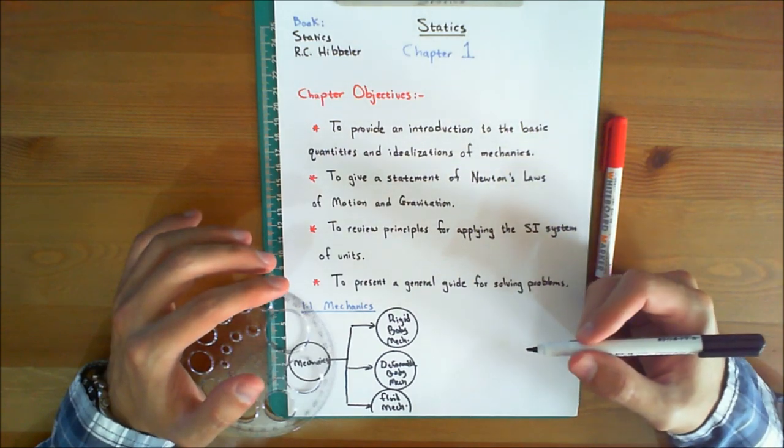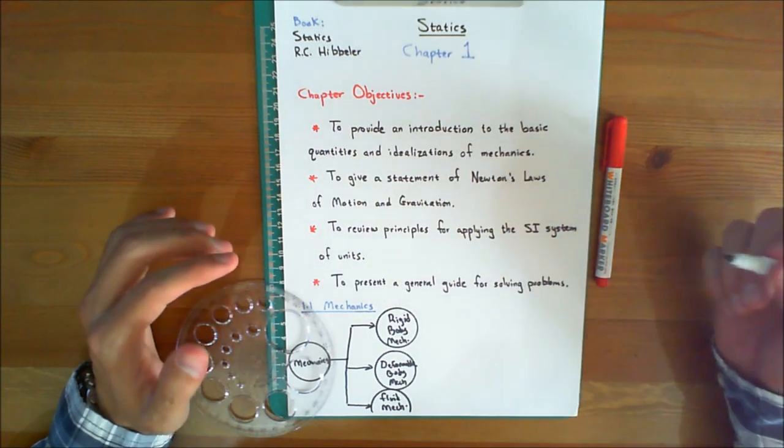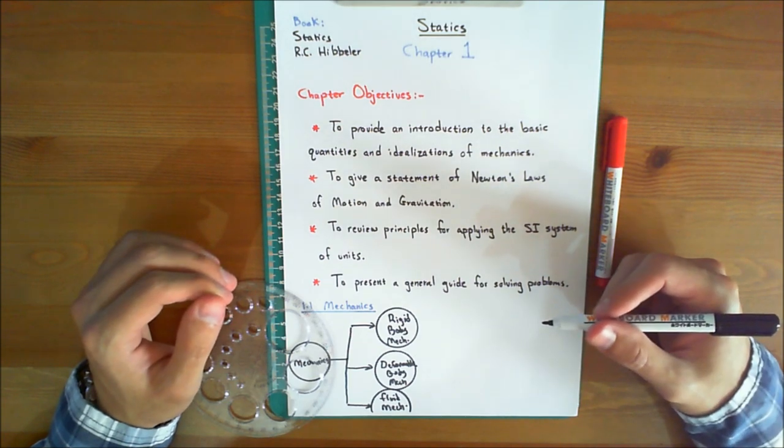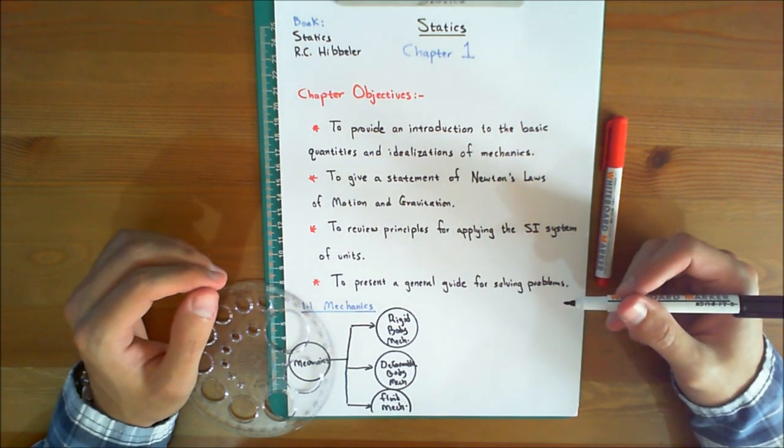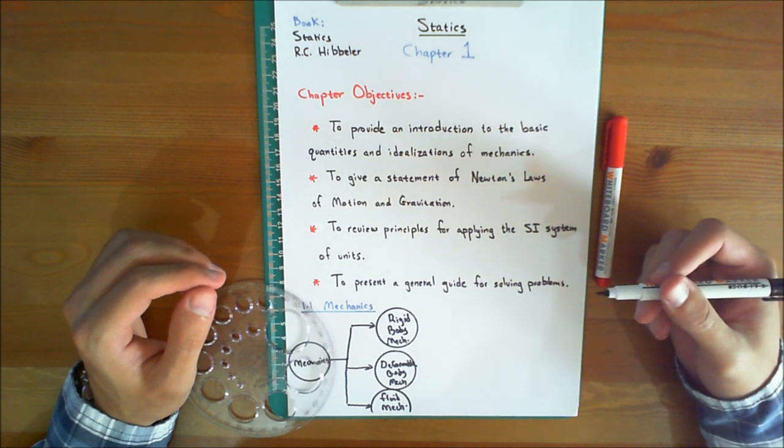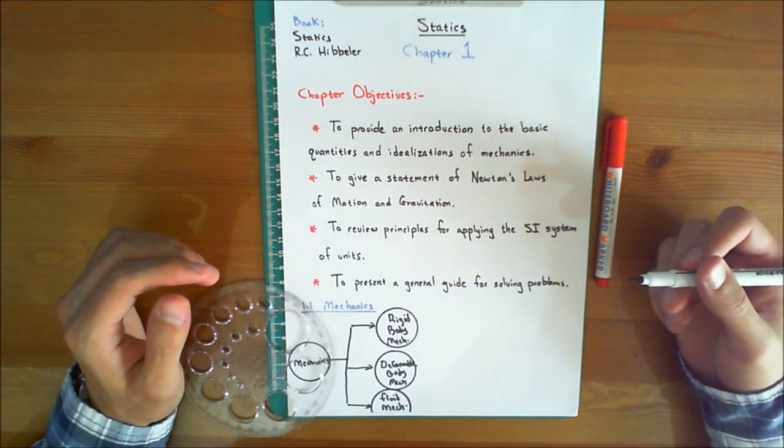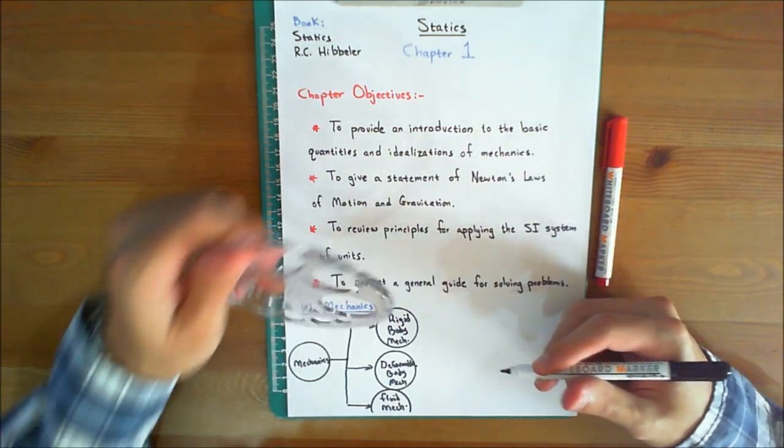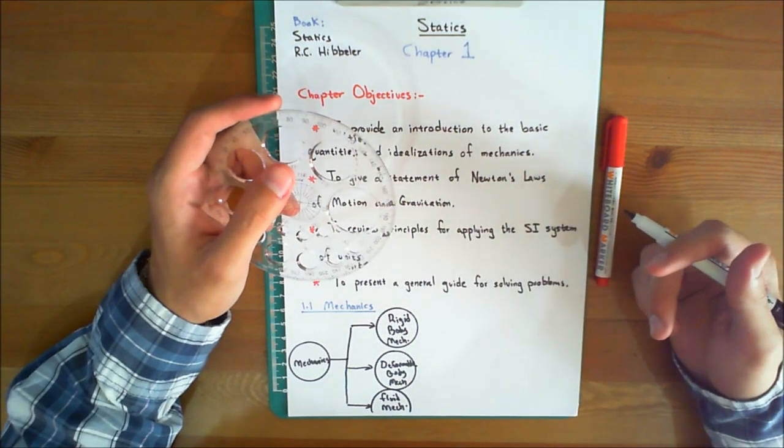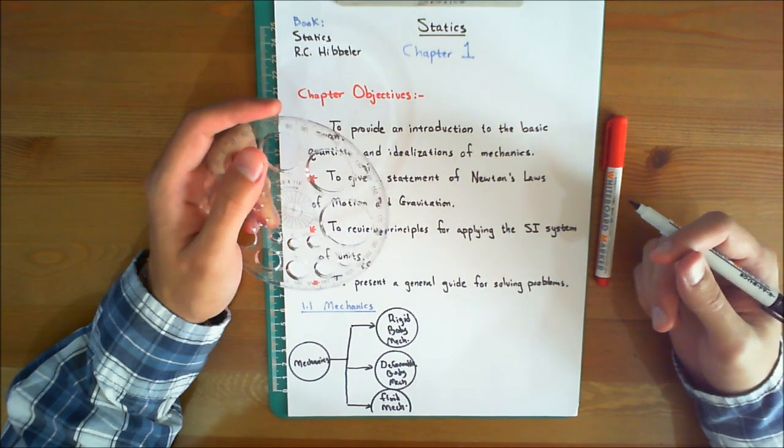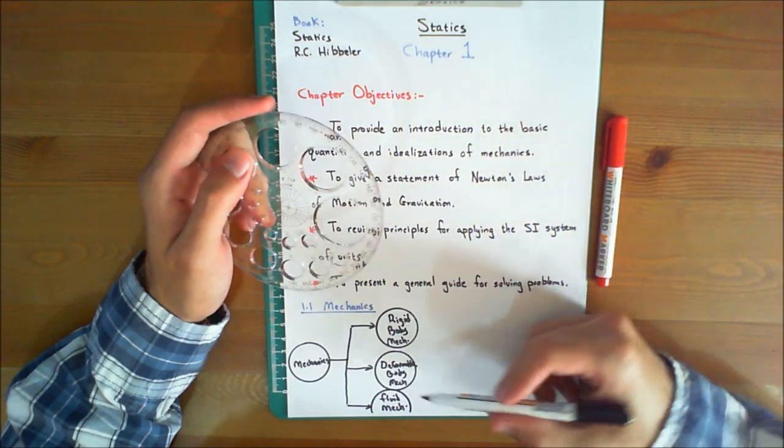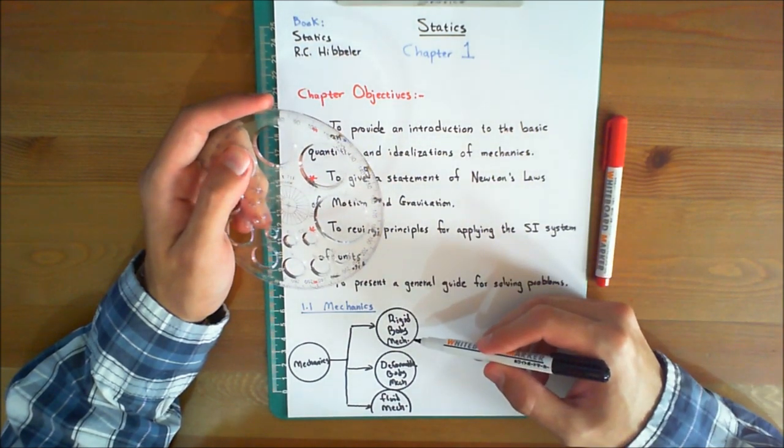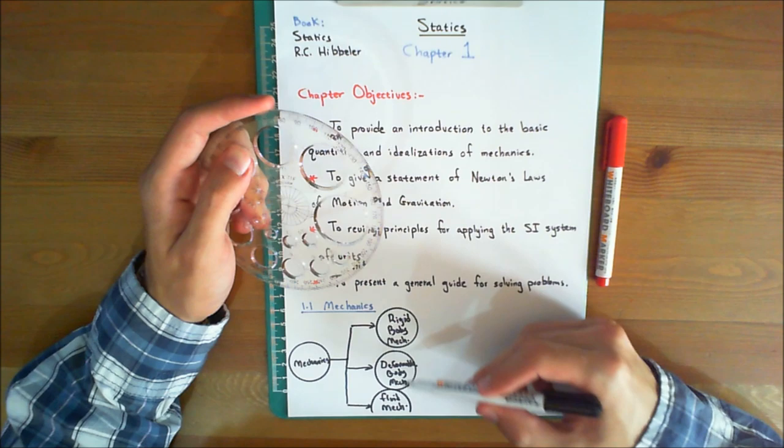Now this book treats only rigid body mechanics since it forms the suitable basis for the design and analysis of many different types of structural, mechanical, or electrical devices encountered in engineering. In my opinion, statics is one of the most important courses that any civil engineer student has to take. Also, rigid body mechanics provides part of the necessary background for the study of the mechanics of deformable bodies and the mechanics of fluids. So you can say that rigid body mechanics is the foundation for these two as well.